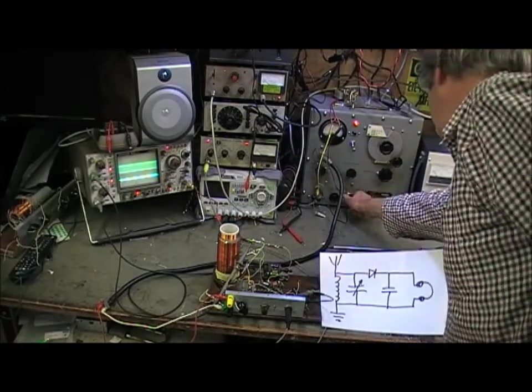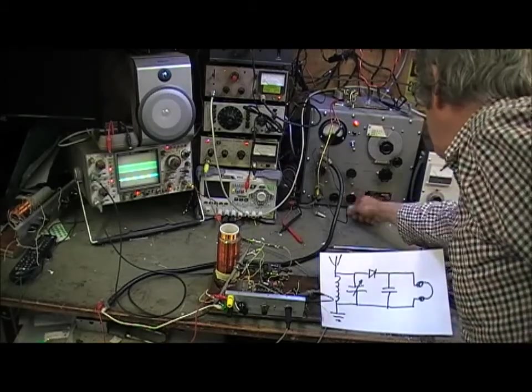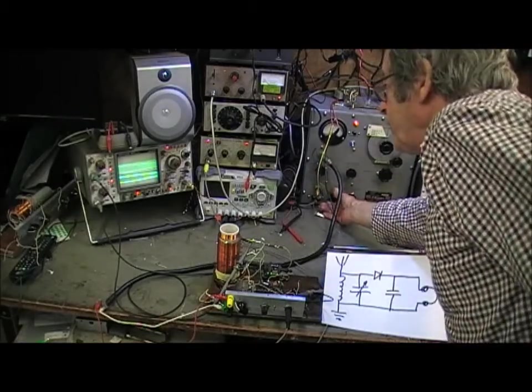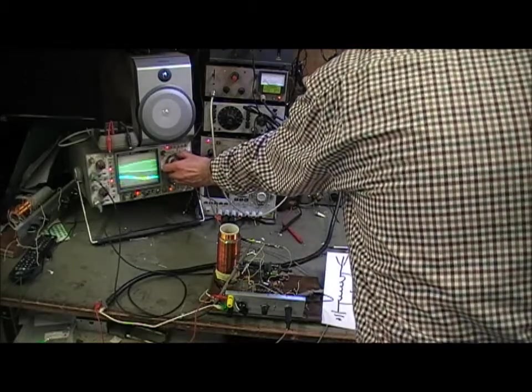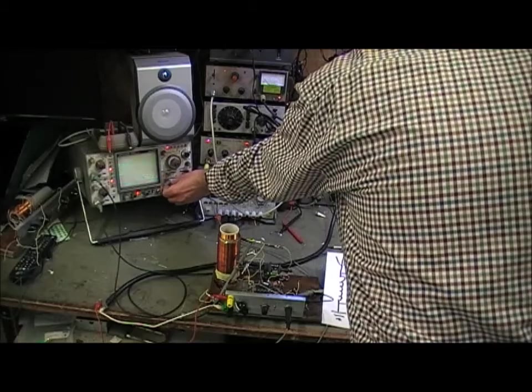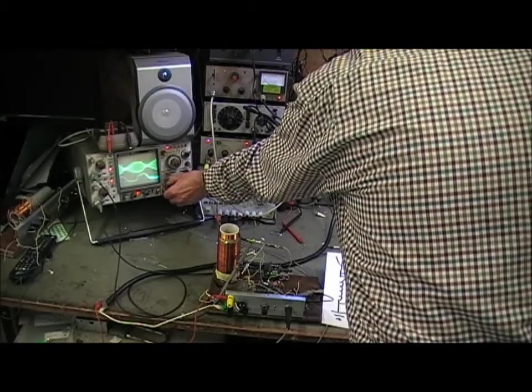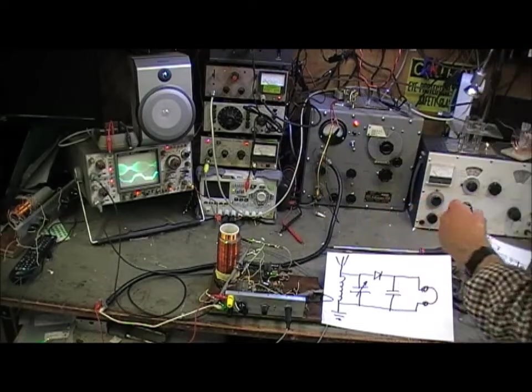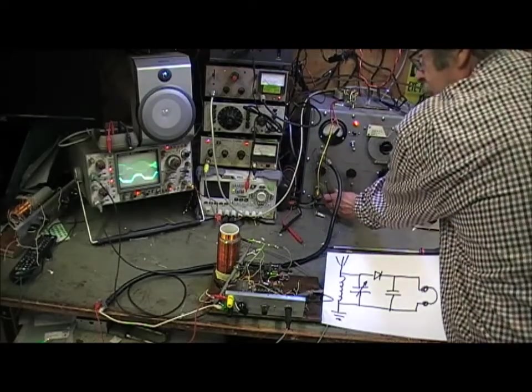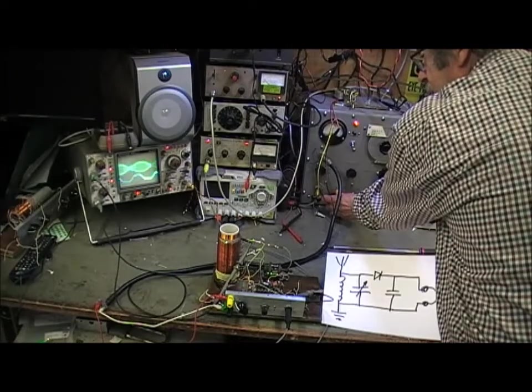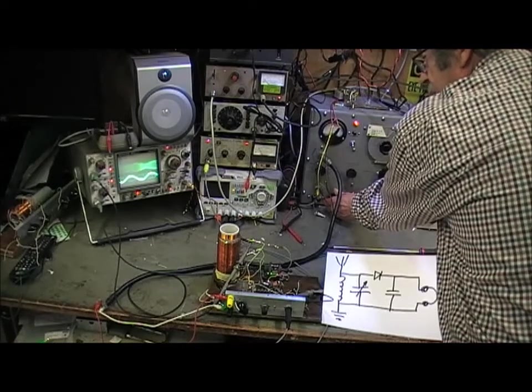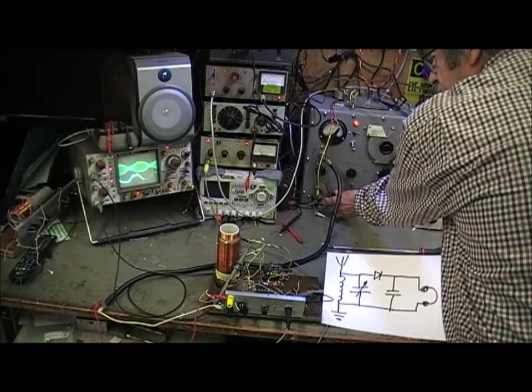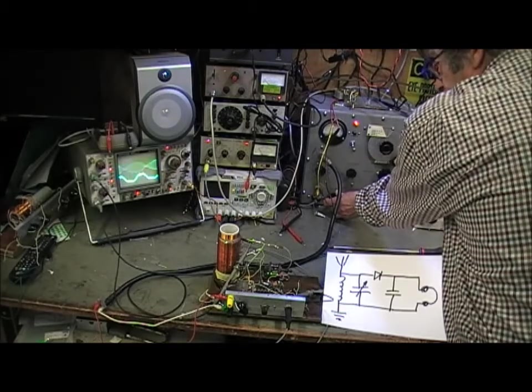And the signal generator will allow me to modulate that. Changing the amplitude is changed like that. So there's the raw carrier with no information. Change its size.